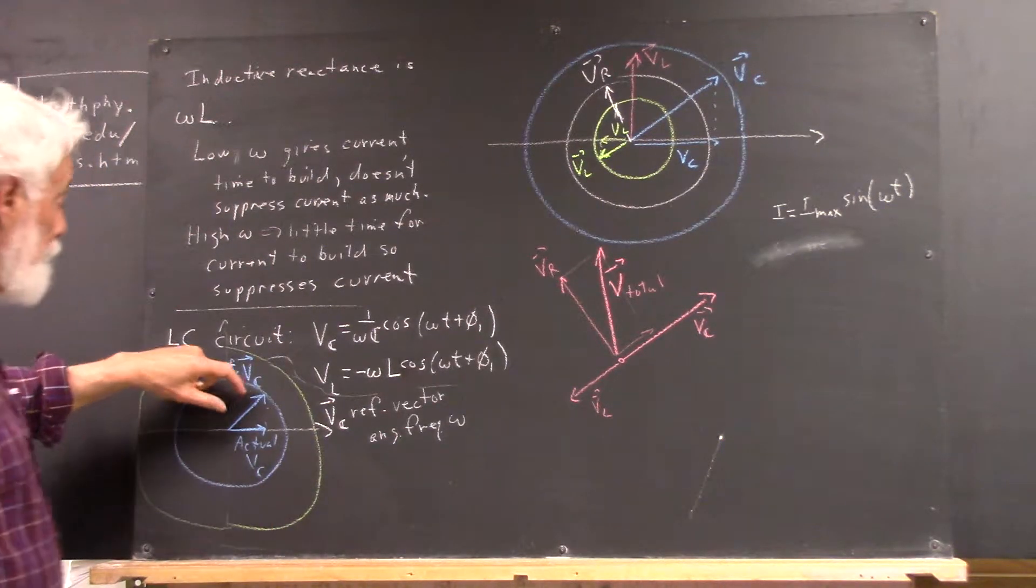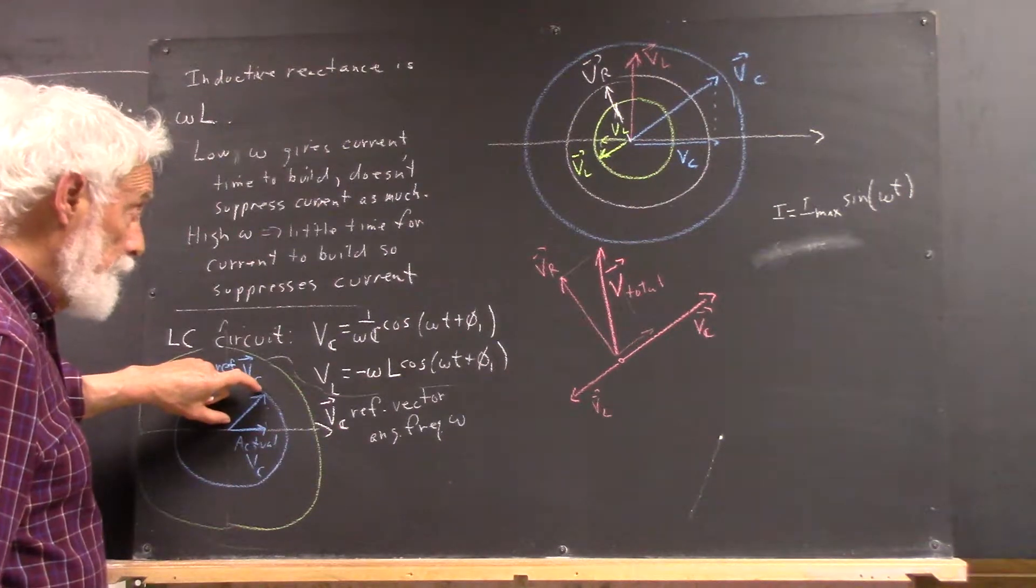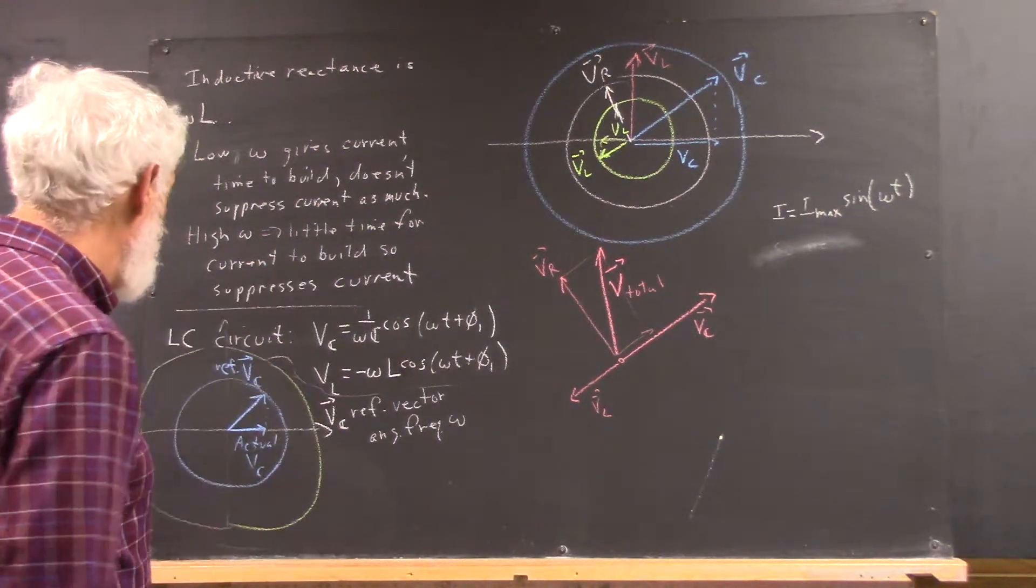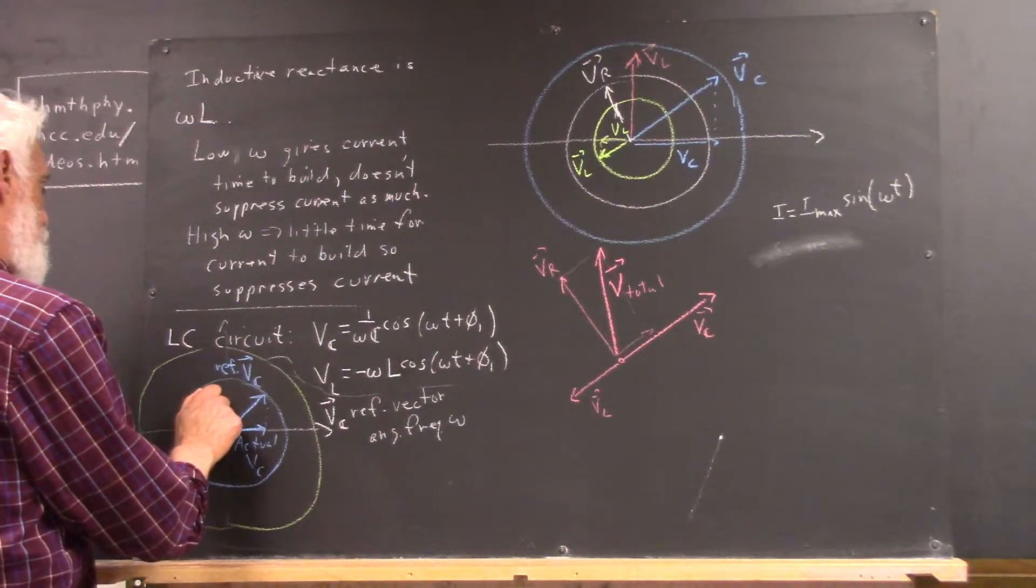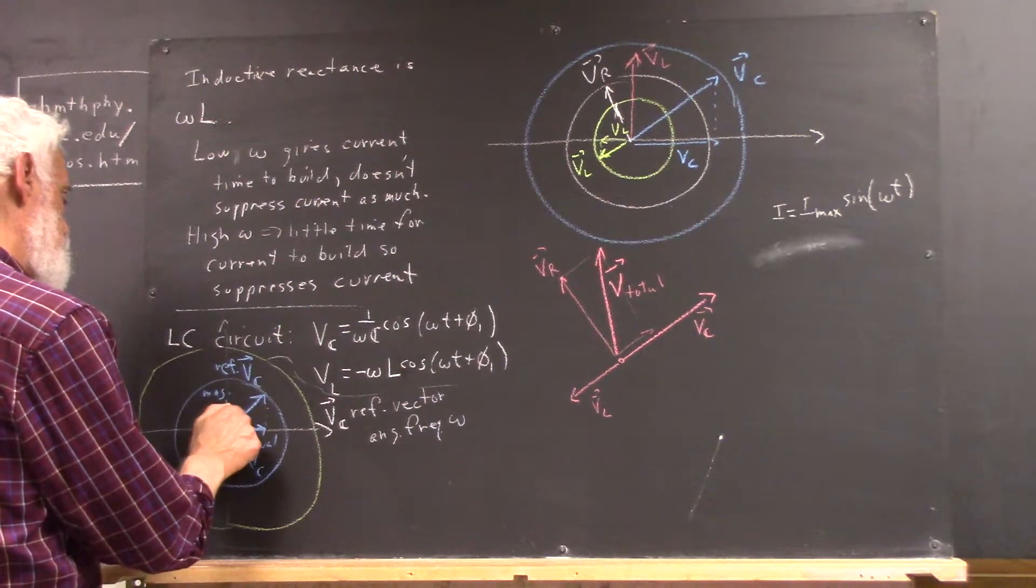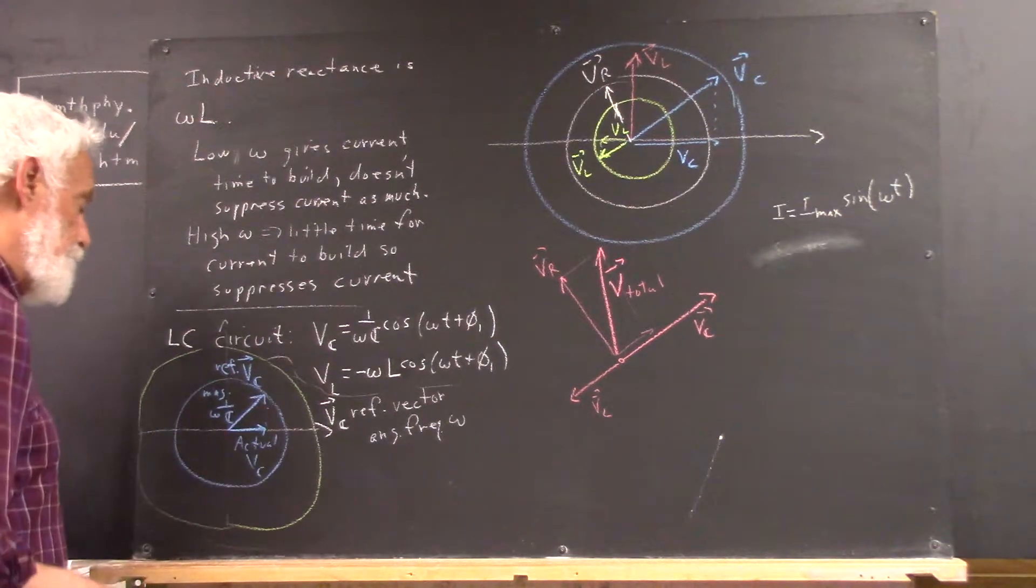Because, of course, if you take this reference VC, this vector of magnitude, maybe I'll write that down, magnitude 1 over omega C.